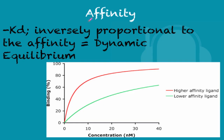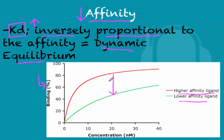Now let's move on to affinity. This is described by the dissociation constant, which is inversely proportional to the affinity of the agonist. So if you have a high dissociation constant, you have a low affinity of the ligand, and this is equivalent to dynamic equilibrium. On the linear scale of affinity, the higher-affinity ligand binds to a higher extent at a lower concentration, whereas the lower-affinity ligand binds to a lesser extent at the same concentration.